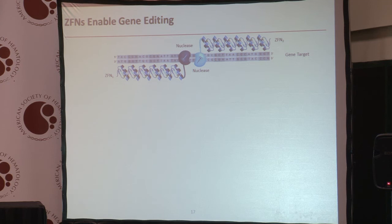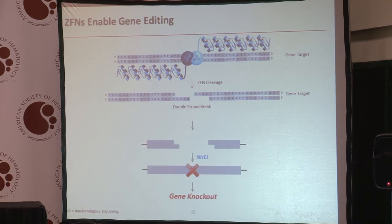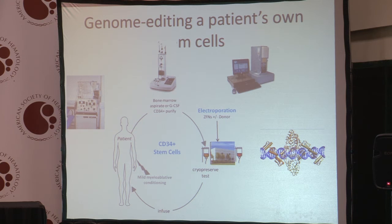How does editing actually work? You build the zinc finger nuclease, and it binds to a target gene, and then it creates a double strand break — it cuts it — and then Mother Nature repairs the break. But the marvelous thing is the cell makes a mistake and creates a typo in the gene, and as a result produces a knockout. In a clinical setting, we take a patient, bring them to the clinic, harvest their stem cells, treat the cells with the zinc finger nucleases, and then put the cells back in.